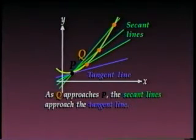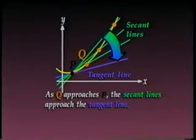To find closer and closer approximations, we let q approach p. As q approaches p, the secant lines approach the tangent line. We can say that the tangent line is the limit of the secant lines as q approaches p.